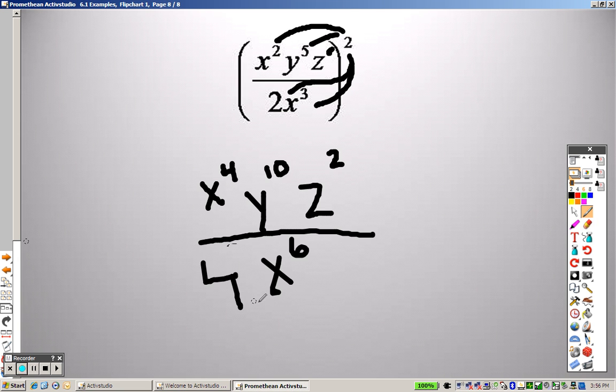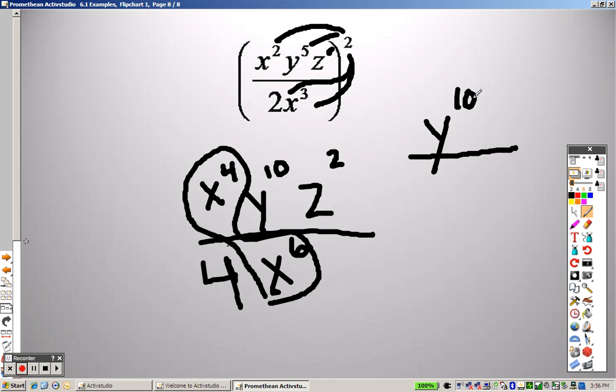The only items they share are these right here, the x's, right? Everything else, there is no other y's, so it's just y to the 10th, and it's z squared.